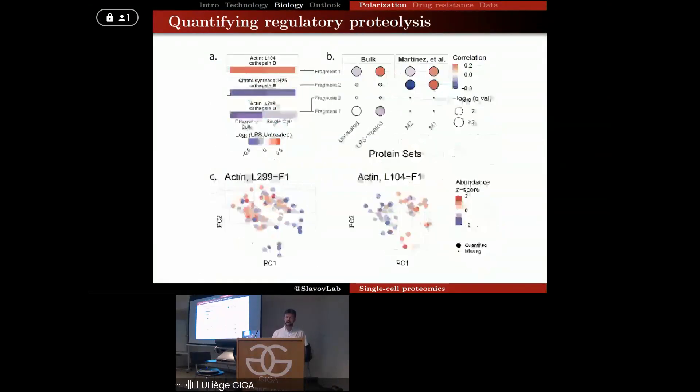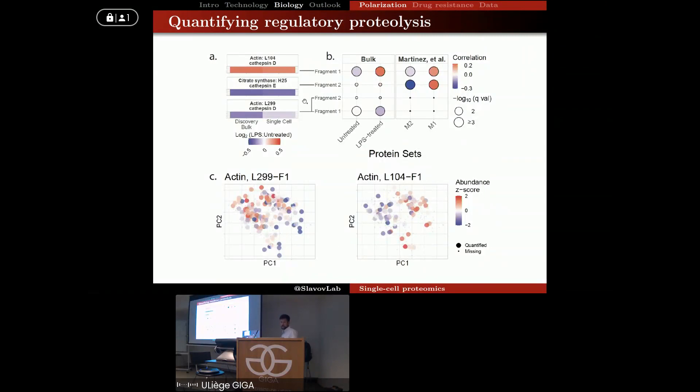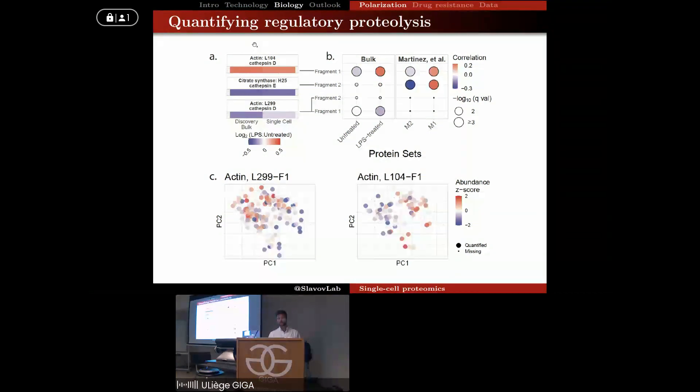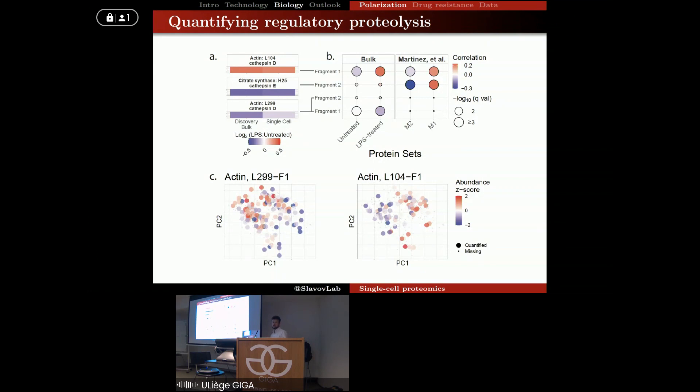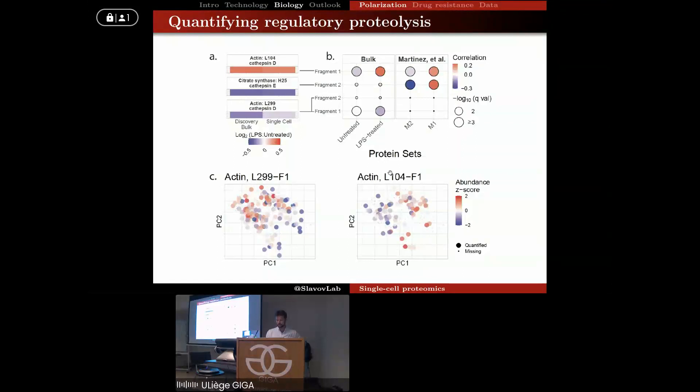And we know that one of the modes of regulation of macrophages is based on proteolytic cleavage of proteins. So we developed our prioritized analysis that I told you about, we tuned it to measure proteolytic products. And we first used classical well-established methods for measuring proteolytic products in bulk to validate the ability to measure proteolytic products in single cells, which is what I've shown here on the top. And we demonstrated that those proteolytic products that we measure are associated with the inflammatory status of the cell. And then we were able to measure these proteolytic peptides in the single cells, shown here at the bottom.